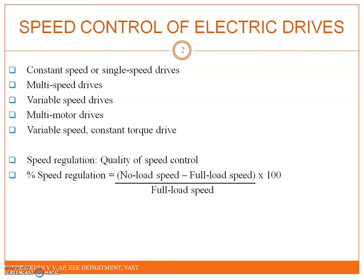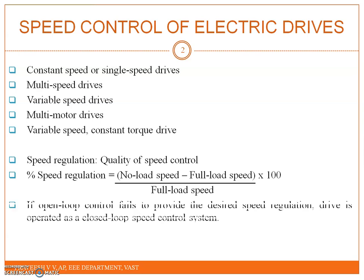The no load speed is not equal to the full load speed, so speed regulation is expressed as a percentage of full load speed. If open loop control fails to provide the desired speed regulation, then the drive is operated as a closed loop speed control system.